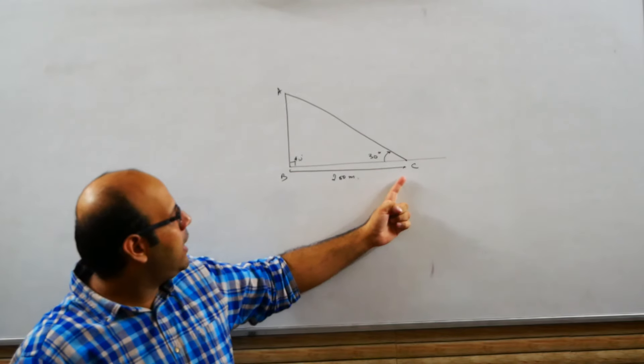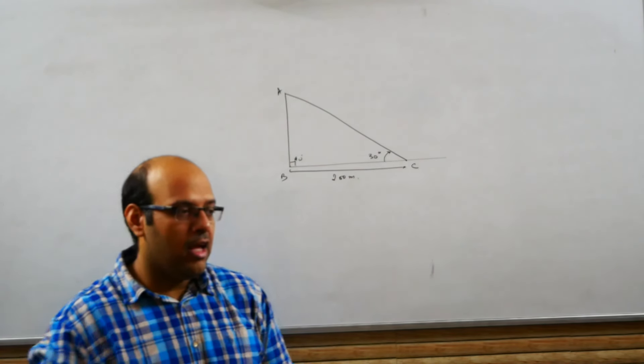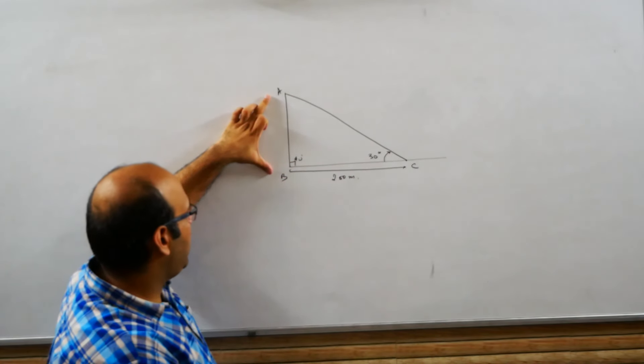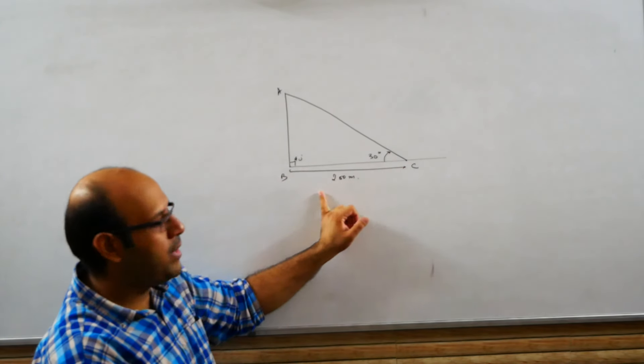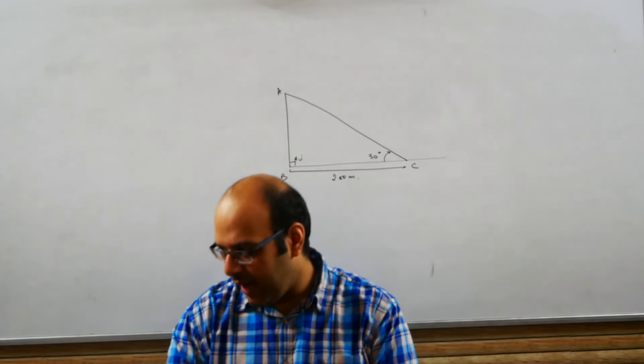Right? What do you want to find? You want to find AB. So, what do you want to find, this height, and this 200 meters which is the length, is there any trigonometric relation? Yes, sir.